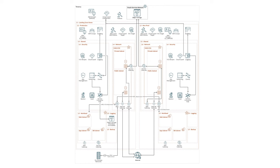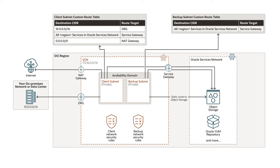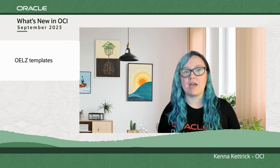The workload expansion template enables you to easily scale your workloads in cloud by setting up the infrastructure on top of the existing OELZ to host a three-tier application, web app, and database. The Exadata expansion template allows you to integrate and prepare the environment to host your Exadata infrastructure within the OELZ. Both templates improve automation, simplify migration, and offer even more agility.